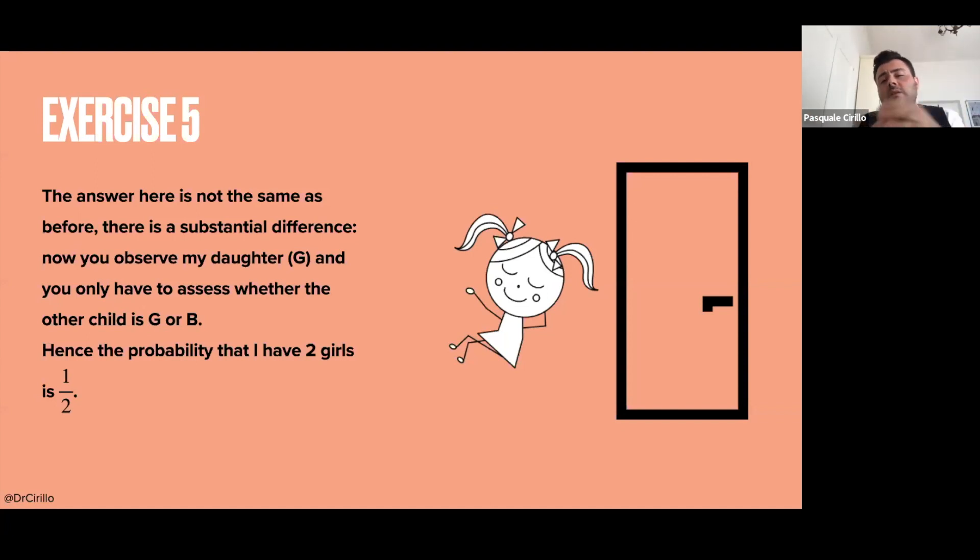So in this second exercise, the probability of having a girl, that is to say the probability that also the second child is a girl. So the probability that I have two girls is one half. You see the difference.